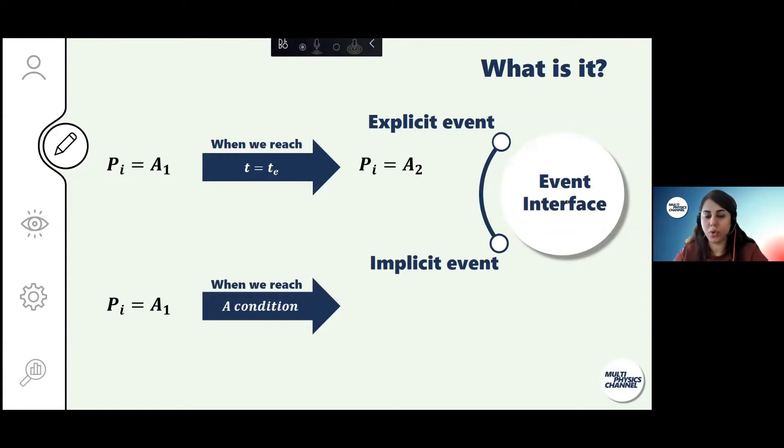Something that you need to keep in mind for implicit events: your condition needs to be modified to be based on zero, which in the following slide I'll show you what it means, but it's an important factor.